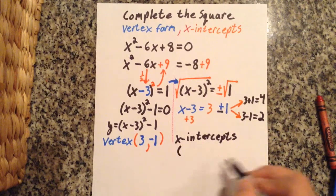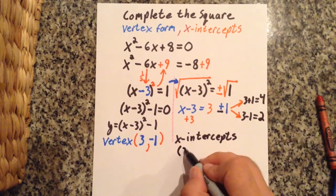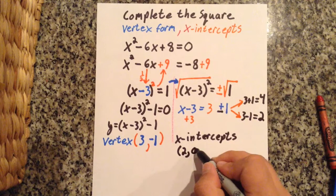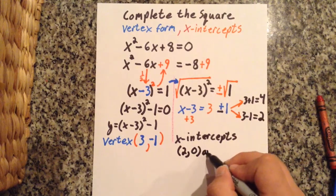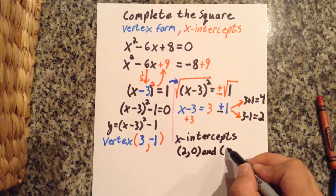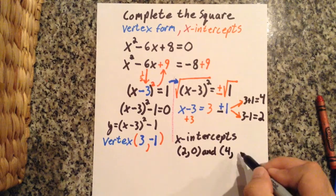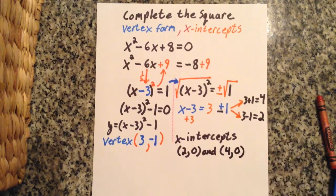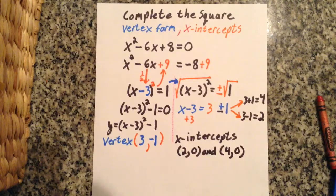As a coordinate: 2, 0 and 4, 0. If I wanted to know what the y-intercept was, well that would be 0, 8. But I just wanted to find the vertex form and the x-intercepts. Thank you.